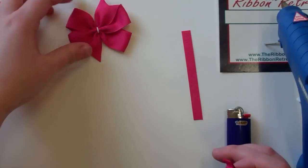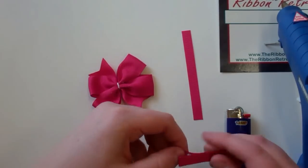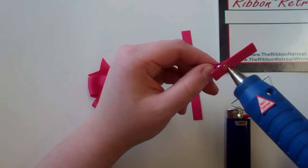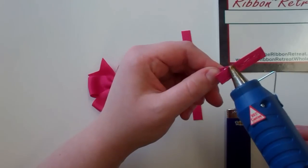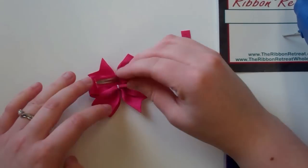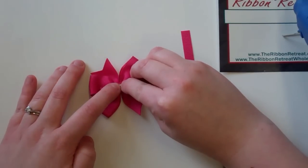I'm going to start by turning the pinwheel bow over, running a bead of glue on the top of my alligator clip, pressing firmly on the back of the bow.